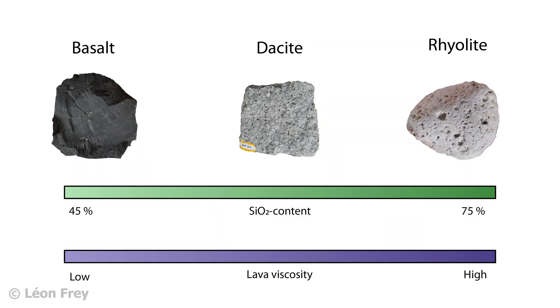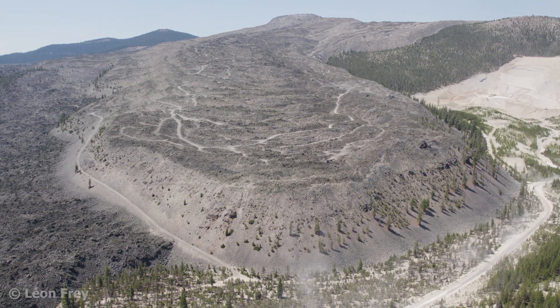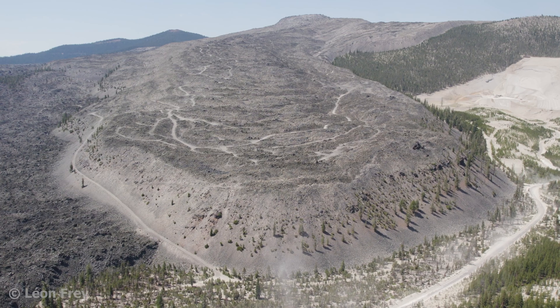Lavas with higher SiO2 contents, like rhyolitic lavas, form thick lava flows that do not flow far because of their high viscosity.